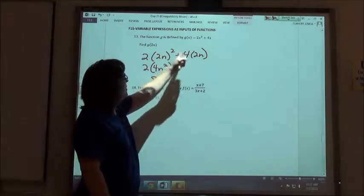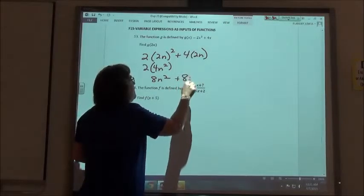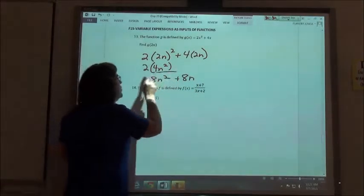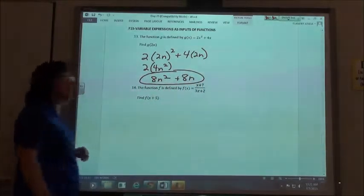My second term, I'm just taking 4 times 2n, which is 8n. These are not like terms, I can't add them together, so my answer is just 8n squared plus 8n.